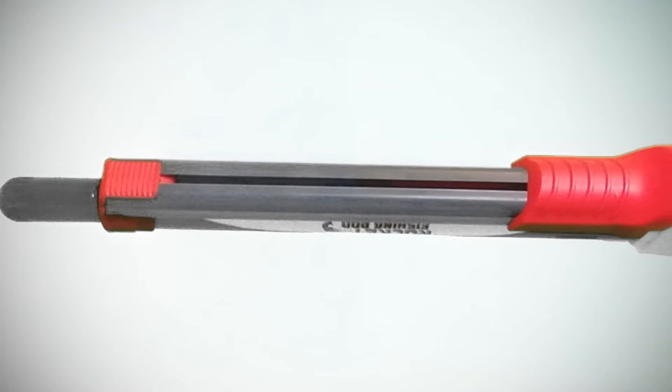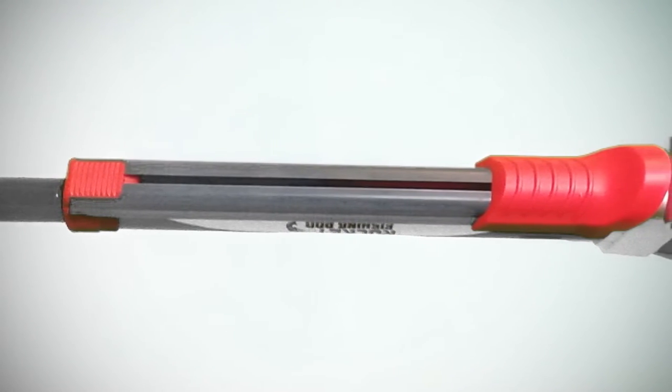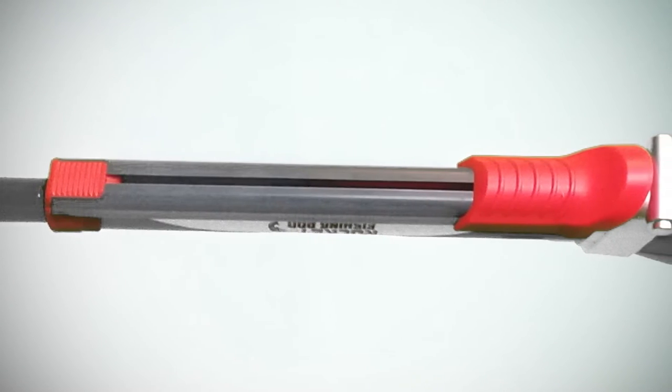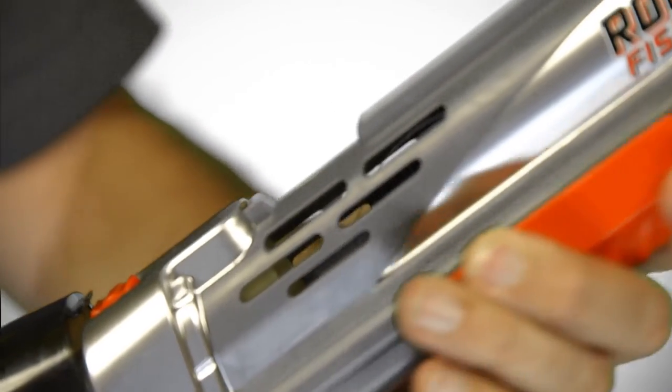You can tell if the rod has already been cocked by turning it upside down and looking inside the vent that the cocking mechanism slides along. Look for a white piece with a black loop string attached to it.